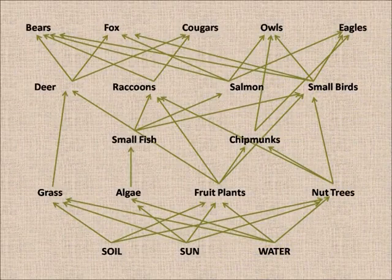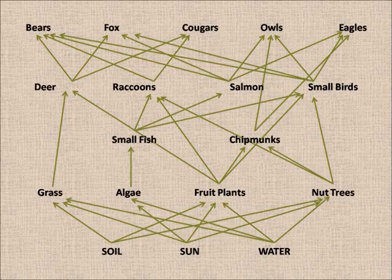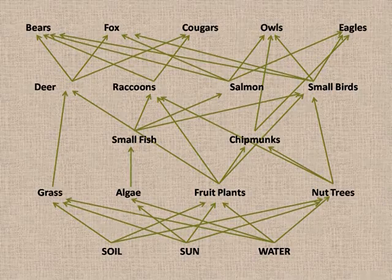When everything in the temperate deciduous forest combines, you get a food web similar to the one shown. This demonstrates the flow of energy throughout this biome. Thank you.